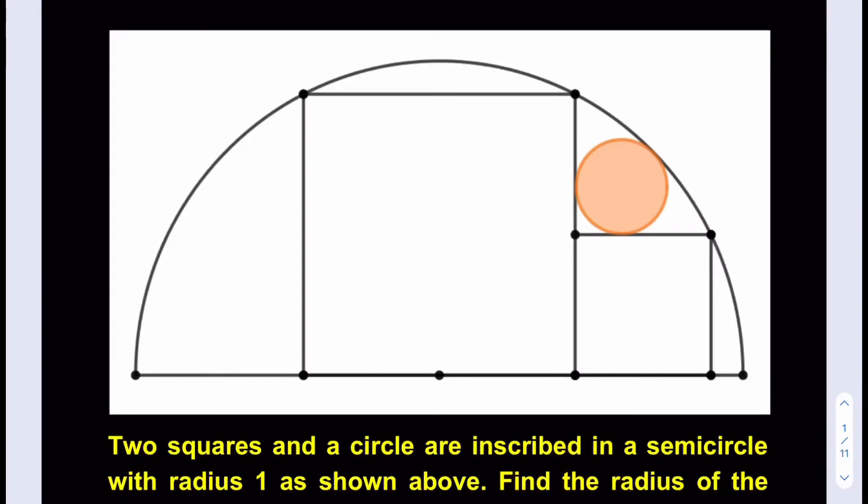Hello everyone. In this video we're going to be solving a geometry puzzle. You can go ahead and pause the video and try the problem yourself first. Two squares and a circle are inscribed in a semicircle with radius one, as shown. Find the radius of the circle, which is shaded.